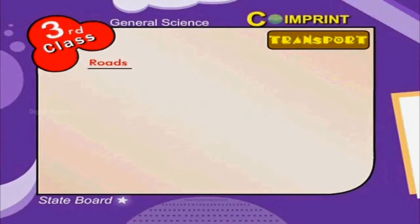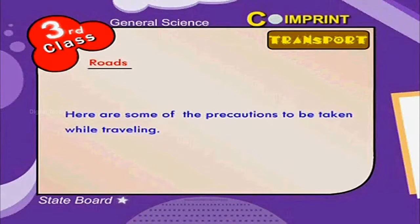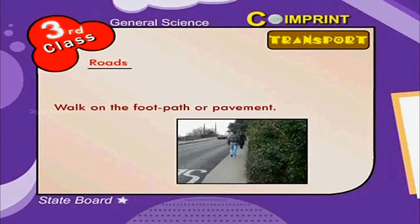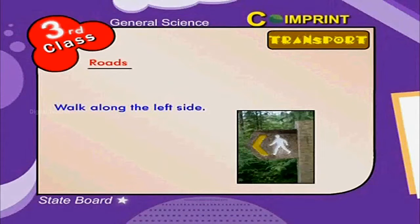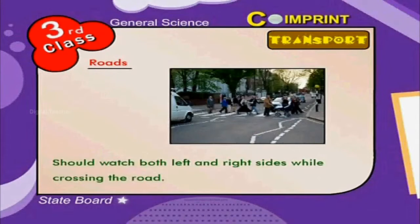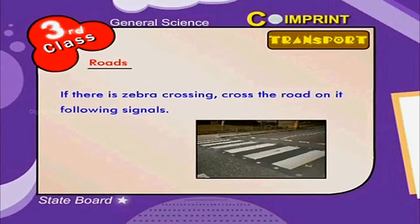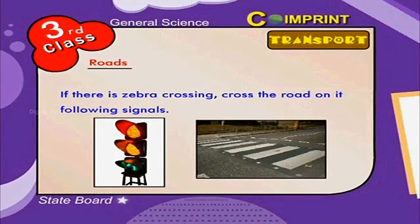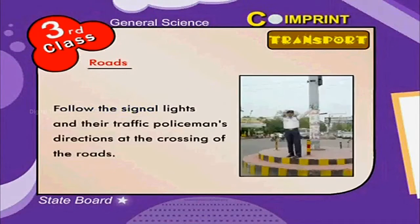Here are some of the precautions to be taken while travelling. Walk on the footpath or pavement. Walk along the left side. Should watch both left and right sides while crossing the road. If there is a zebra crossing, cross the road on it following the signals. Follow the signal lights and traffic policeman's directions at the crossing of roads.